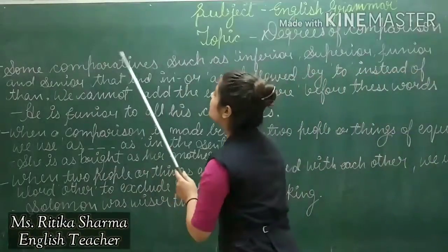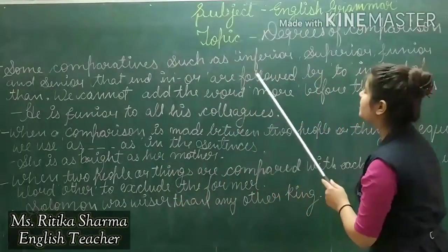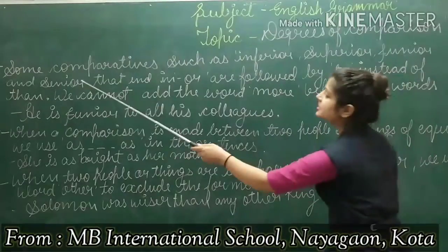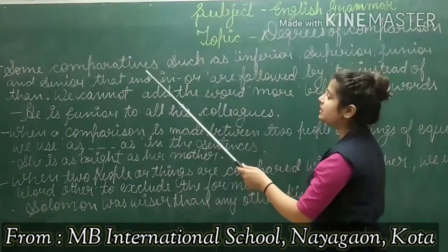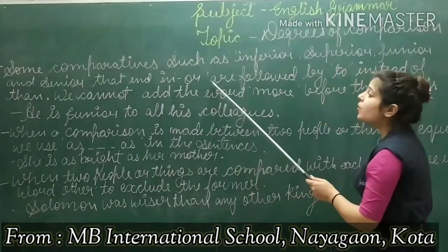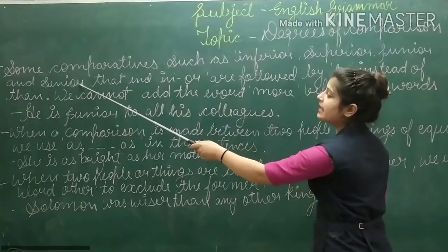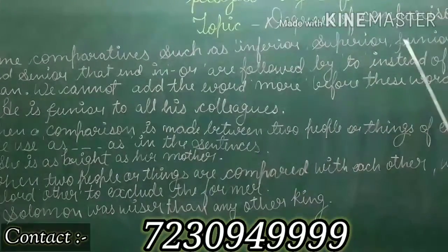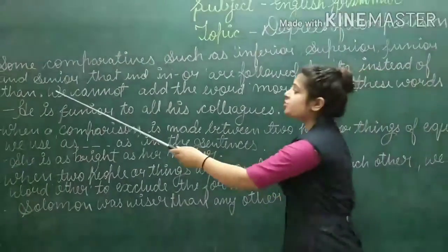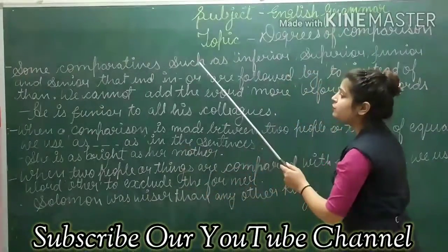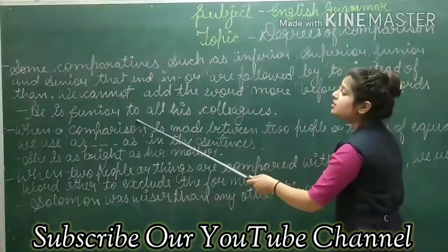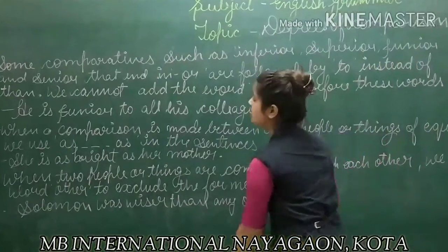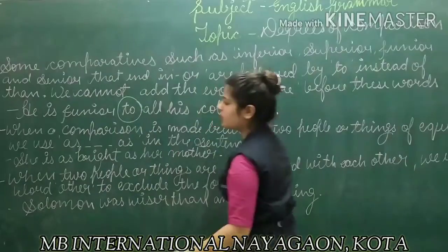Next are some comparative words such as inferior, superior, junior, and senior — words that end in OR. These words ending in OR are followed by the word TO instead of THAN. It means in these types of words we will use TO instead of THAN. हम यहां पे THAN के place पर TO का यूस करते हैं।